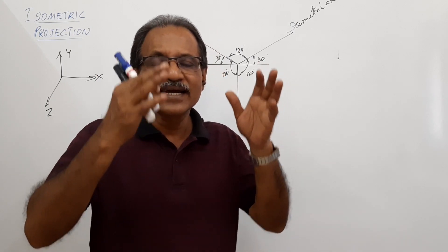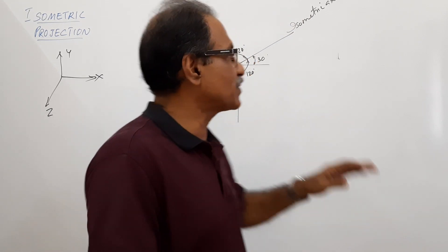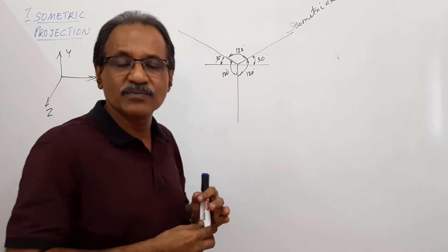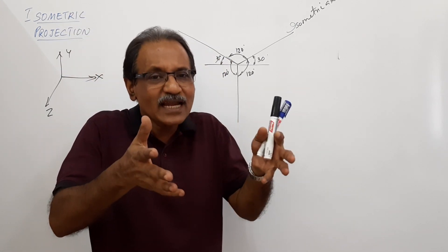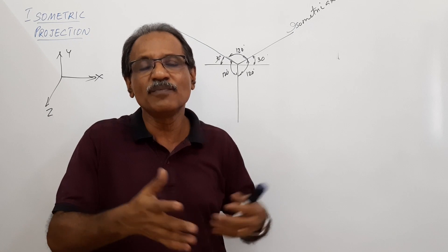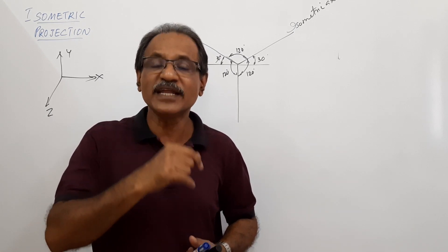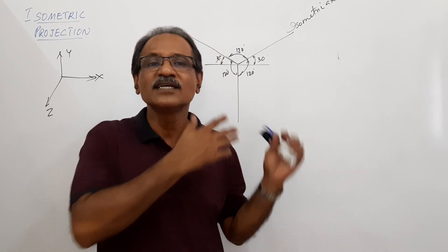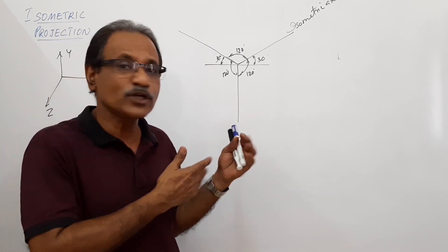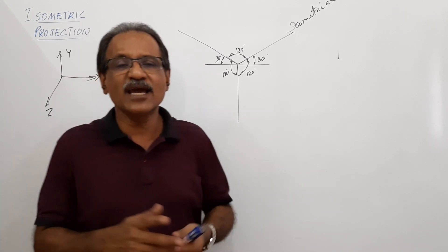This is the basic concept of isometric projection. The dimensions along the x-axis can be represented along either inclined isometric axis. The key advantage is that you get a pictorial shape — the physical appearance of the object is visible in a single view. This is achieved in multi-view orthographic projection only by using more than one view, whereas isometric projection gives you a 3D idea about the shape in one drawing.